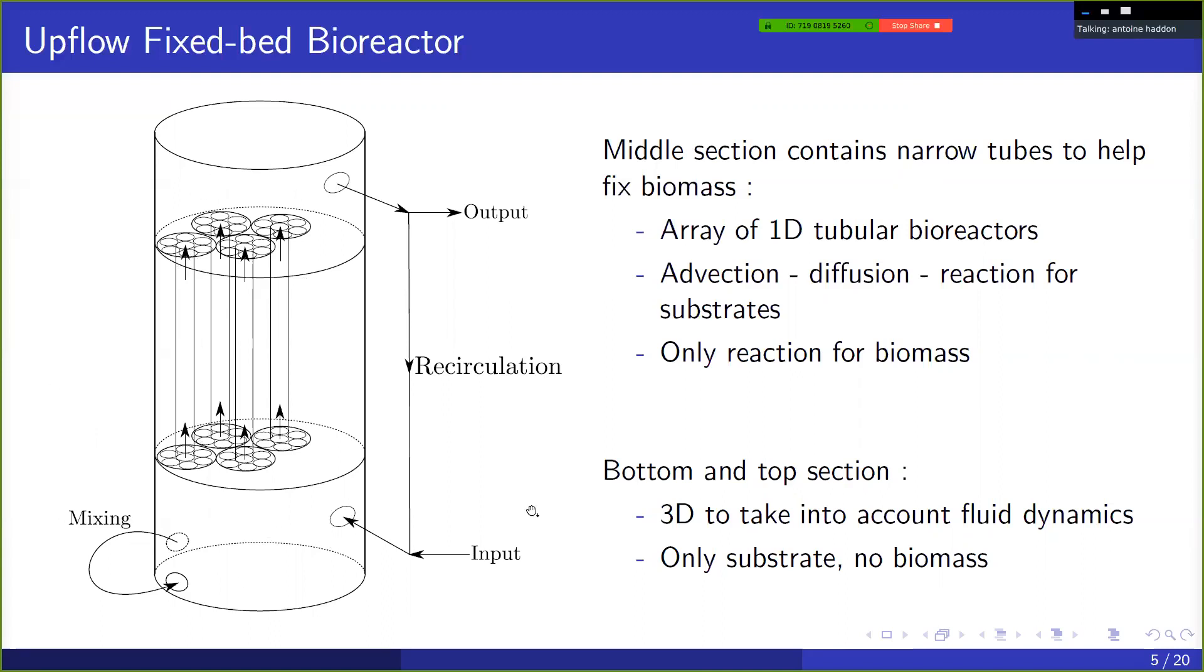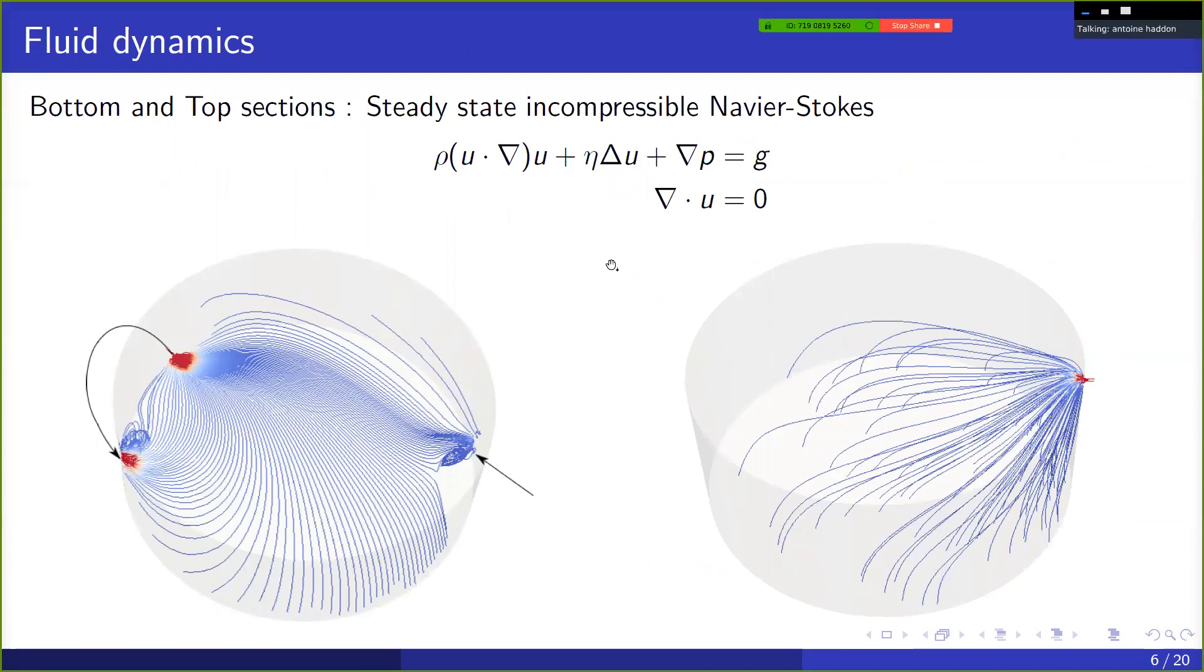So for these three dimensional zones, we need to take into account fluid dynamics. For this, we consider a steady state Navier-Stokes equations. Essentially, we're neglecting turbulence and considering steady state because the differences of time scales, right? Fluids are going to reach a steady state a lot faster than a biological system. Pictured here, we have the streamlines for the bottom section and the top section. So the bottom section, this is the entrance, the input fluids. And here we have the mixing system, which is a pump. And these streamlines represent essentially the trajectories of the fluid particle. And same thing for the top here with the output here.